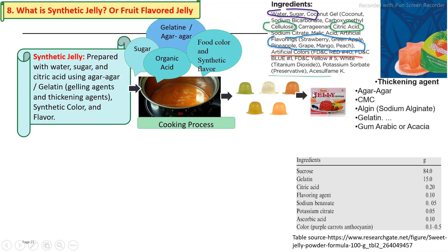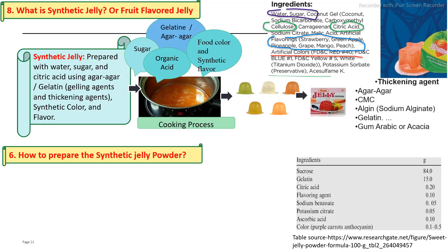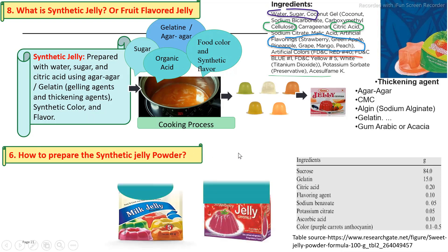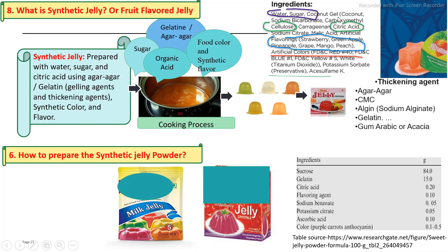Synthetic jelly powder is also available in the market. It is prepared using similar ingredients but without water — sugar, thickening agents, citric acid, color, and flavors — to produce synthetic jelly powder.